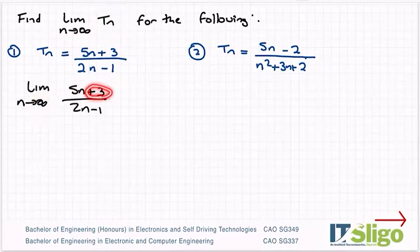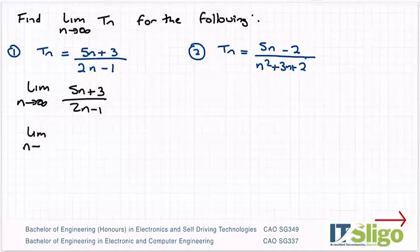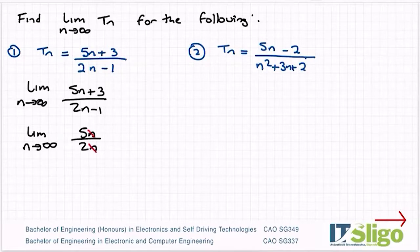Which means the plus 3 here really has no bearing on 5n. 5n is too large for 3 more to make any difference. In the same way subtracting off 1 from 2n will make no difference. So therefore I can write this as the limit as n tends to infinity 5n over 2n. And the n's are going to cancel. So therefore I am going to get a limit on that one of 5 over 2.